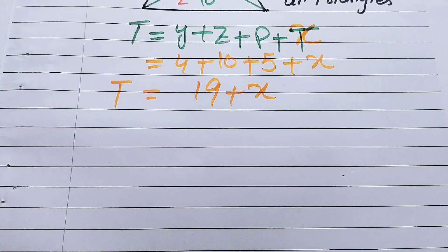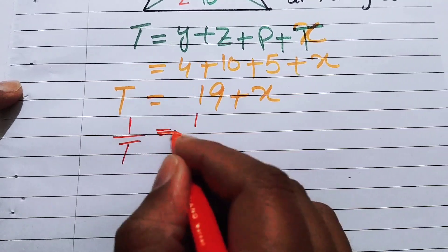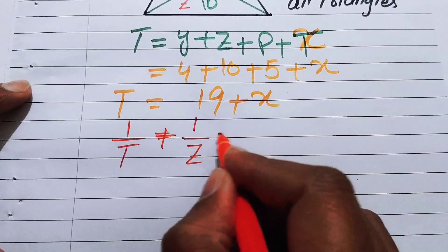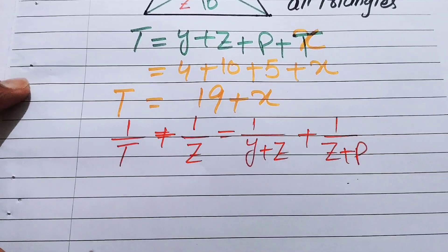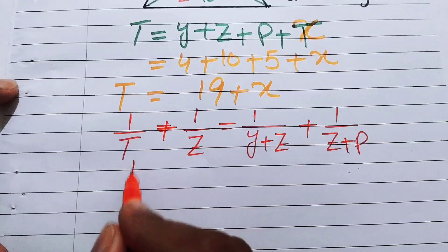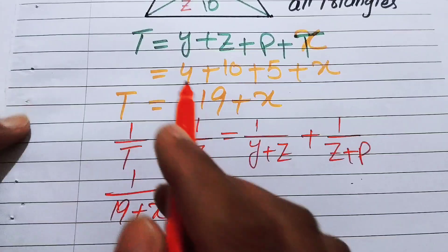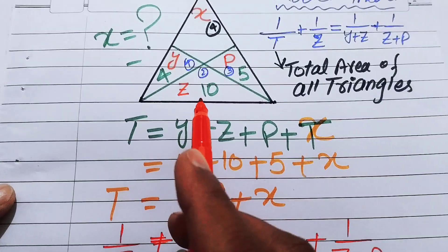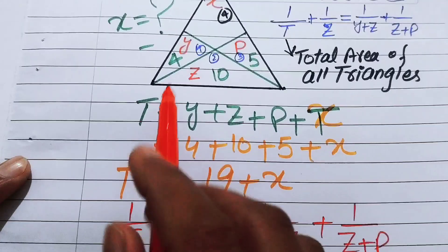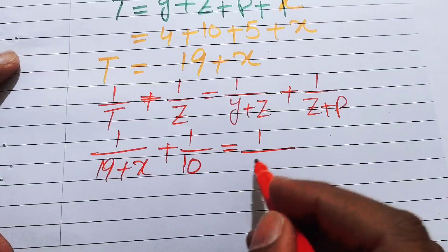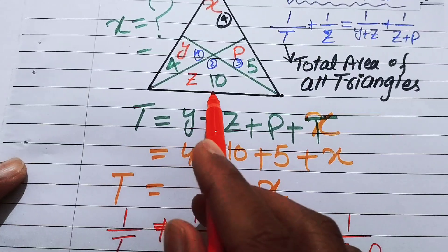Now we apply the Ladder Theorem: 1 over t plus 1 over z equals 1 over (y + z) plus 1 over (z + p). Substituting the values: t = 19 + x, z = 10, y + z = 4 + 10 = 14, and z + p = 10 + 5 = 15. So we have: 1/(19 + x) + 1/10 = 1/14 + 1/15.